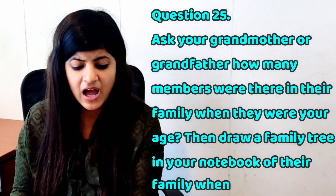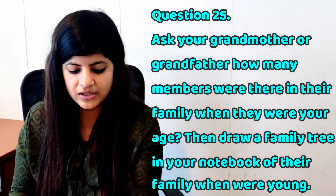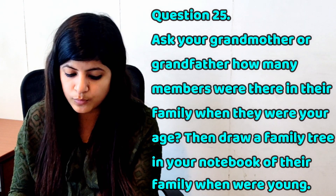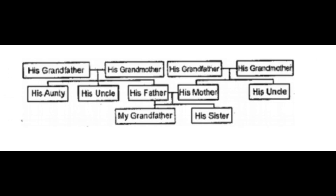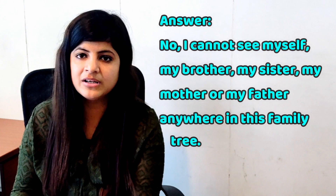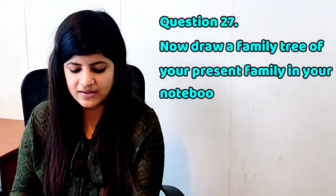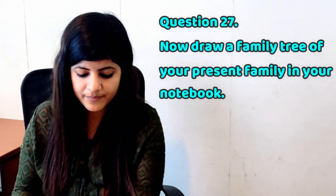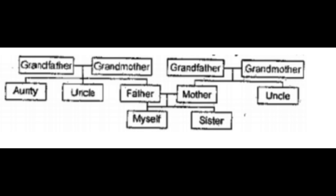Question number 25: Ask your grandmother or grandfather how many members were there in their family when they were at your age. Draw a family tree of their family when they were young. The family tree is on the screen: His grandfather, his grandmother, their children — his auntie, his uncle, his father, his mother, his uncle; and my grandfather's sister. Question number 26: Can you see yourself, your brother or sister, your mother or father anywhere in this family tree? Answer: No, I cannot see myself, my brother, my sister, my mother, or my father anywhere in this family tree. Question number 27: Draw a family tree of your present family. The family tree is on the screen: Grandfather, Grandmother on both sides; Auntie, Uncle, Father, Mother, Uncle; and then Myself and Sister.